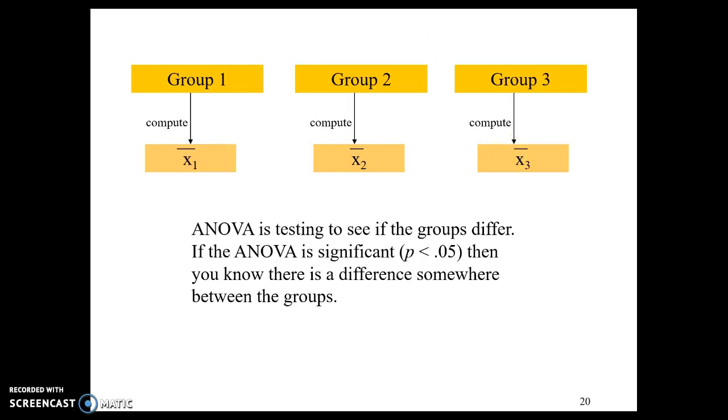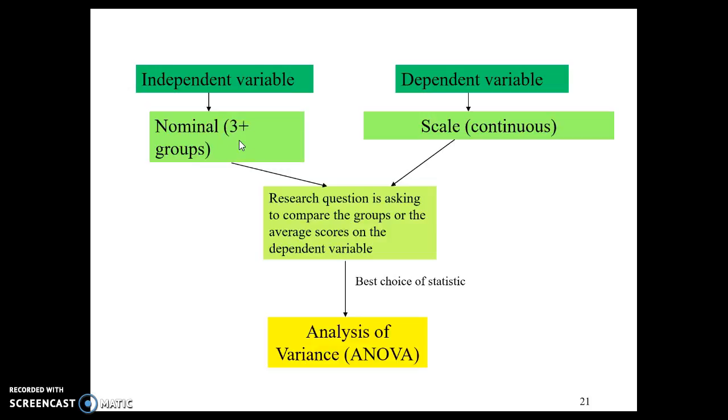What ANOVA is doing is testing to see if these groups as a whole are different. We have an independent variable, these are called factors. These are nominal, so we have three or more groups.